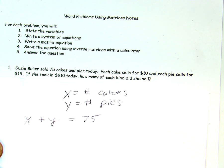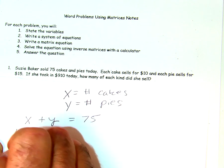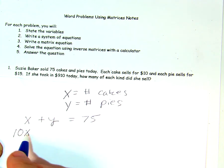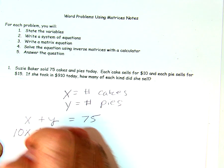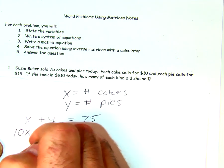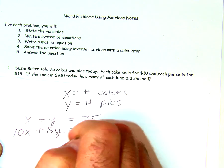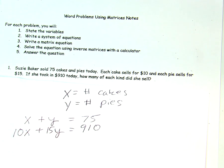Each cake sells for $10, so that's the coefficient, 10x times the number of cakes, and each pie sells for $15, so 15y, and that equals $910. Now we can turn this system of equations into a matrix.